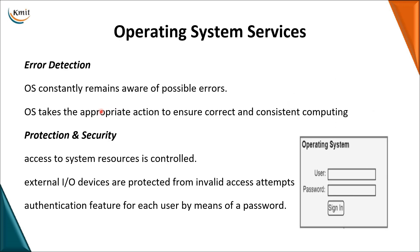The next service is error detection. When a program is loaded from secondary memory into main memory and you start executing it, you may get some errors. The operating system should provide you the type of error, and if required it should even provide remedies or help you in debugging — assisting you in overcoming those particular errors. It helps you in detection as well as in the debugging process.